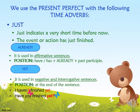We use the present perfect with the time adverb just, which indicates a very short time before now. Just is placed between has or have and the past participle. Already has the same position — between have or has and the past participle — and is used in affirmative sentences: have or has plus already plus past participle. Yet is used in negative and interrogative sentences and comes at the end: I haven't finished yet. Have you finished yet?